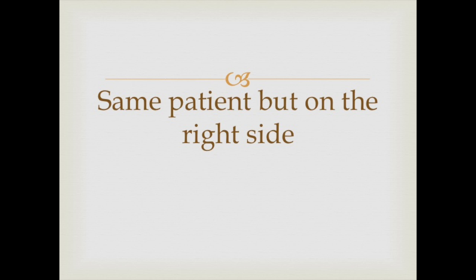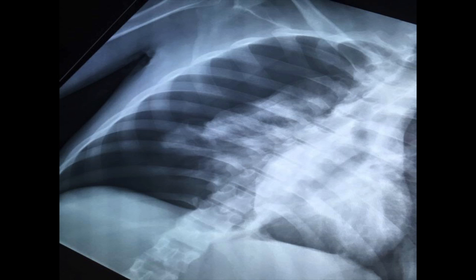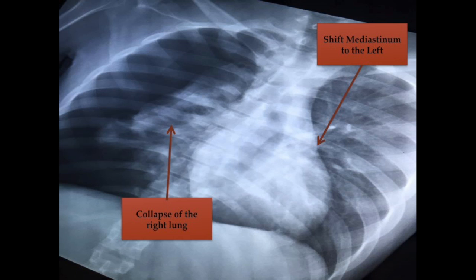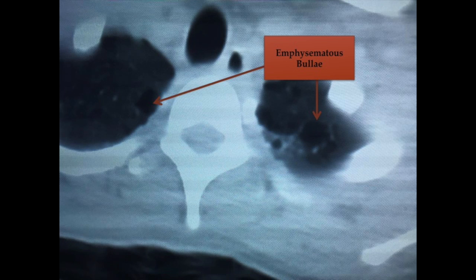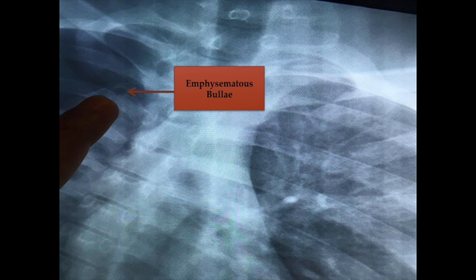Now we show the same patient who developed another tension pneumothorax but on the right side. In this finding, you see the mediastinum shifted to the left side and collapse of the right lung. The question is why did he develop another tension pneumothorax on the right side? On CT scan, it was found he had multiple emphysematous bullae on both sides of the lung. In this chest x-ray, I have pointed at the emphysematous bullae.